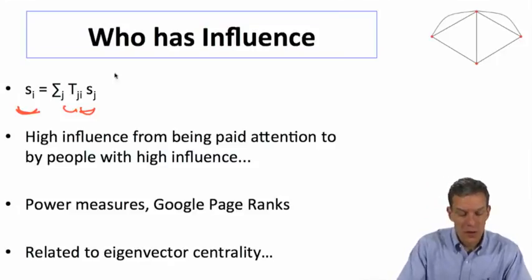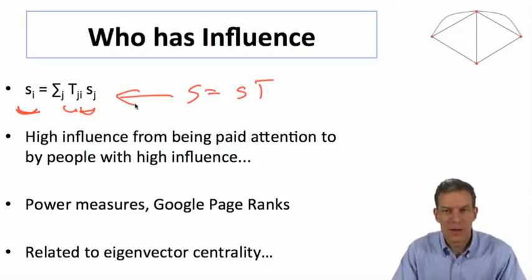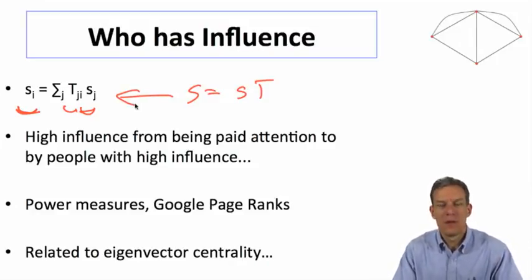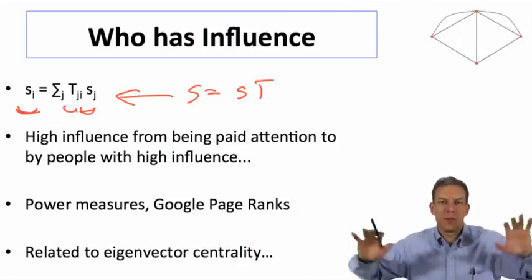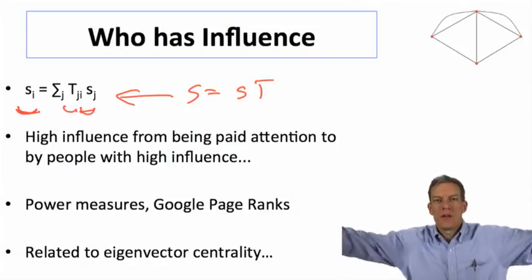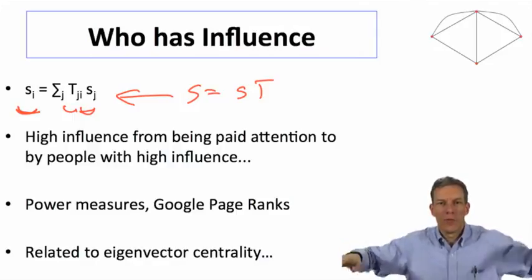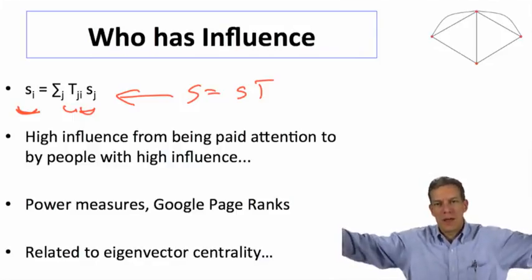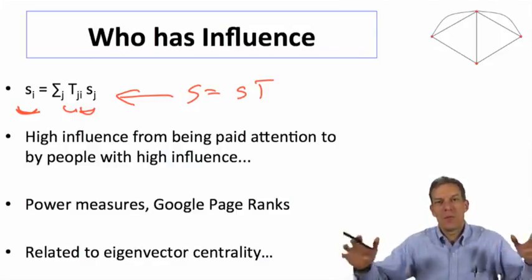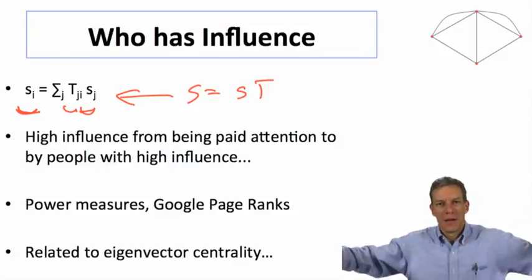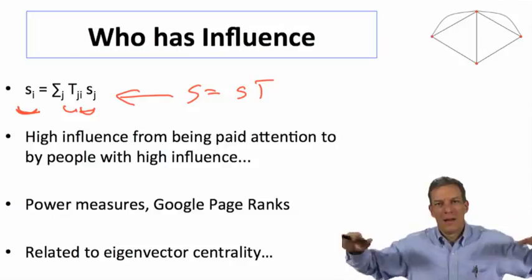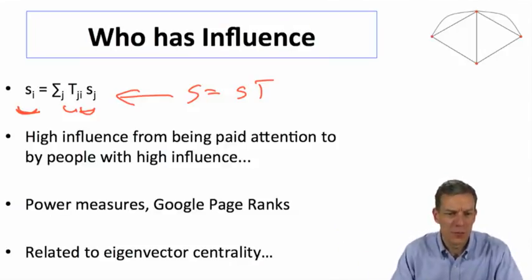The fact that s equals s times T tells us that effectively, the way you get influence is being listened to by influential people. That means your belief is going to get into their beliefs, which is going to get into other people's beliefs. And the more influence they have, the more structure they have on the final. So you get high influence by being connected to by high influence individuals.